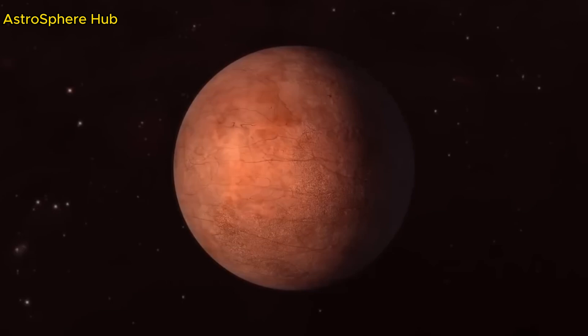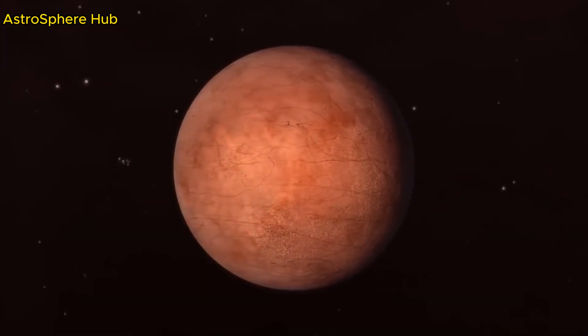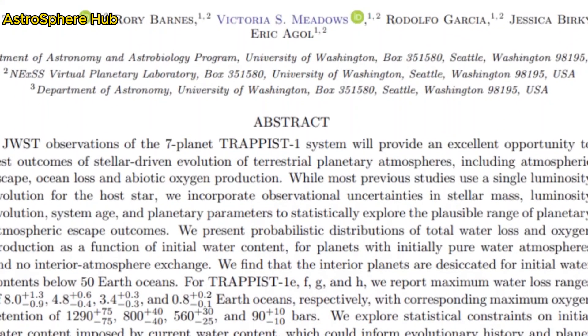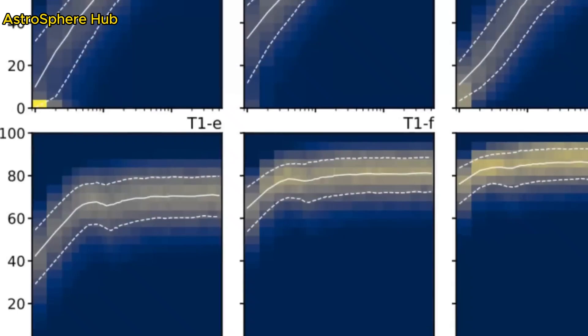And if the planet has a thin atmosphere, its twilight zone, or the border between the night and day sides, could be habitable as well.